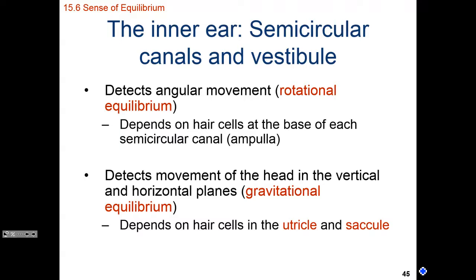Now let's focus more on the inner ear — the semicircular canals and vestibule — for our sense of balance or equilibrium. We can detect angular movement and movement in horizontal planes. Angular movement is referred to as dynamic or rotational equilibrium. Movement on vertical planes is referred to as static, stationary, or gravitational equilibrium. Dynamic equilibrium is based off the three semicircular canals and the ampulla at the opening of each canal. Gravitational equilibrium depends on the utricles and saccules within the vestibule.